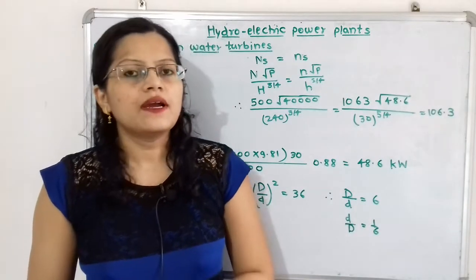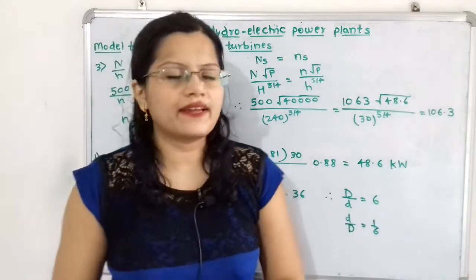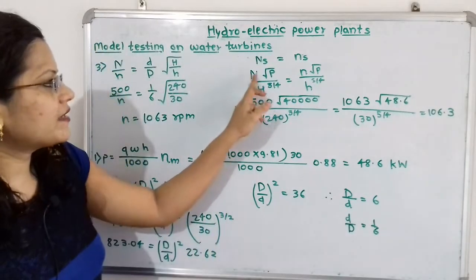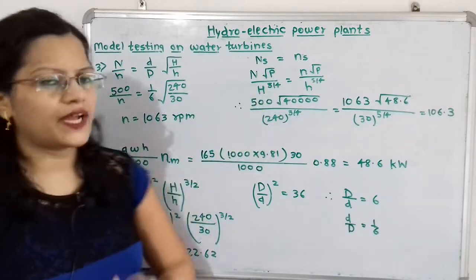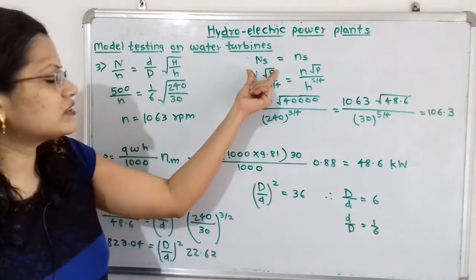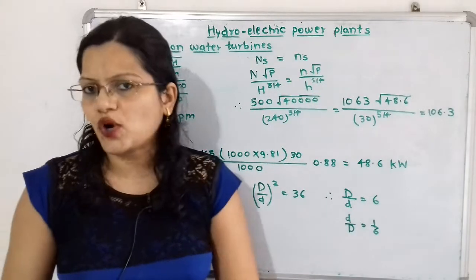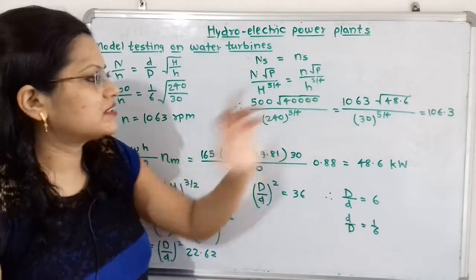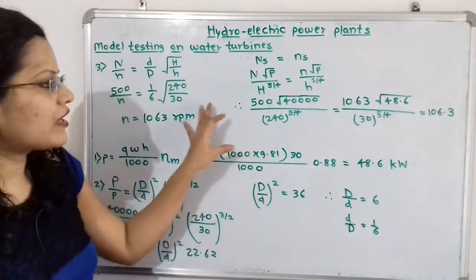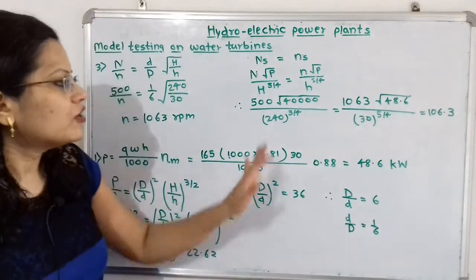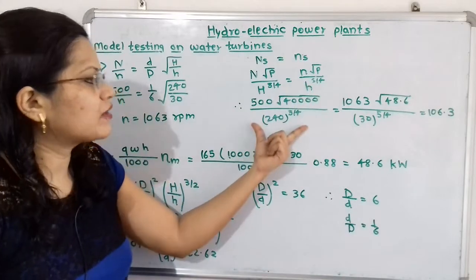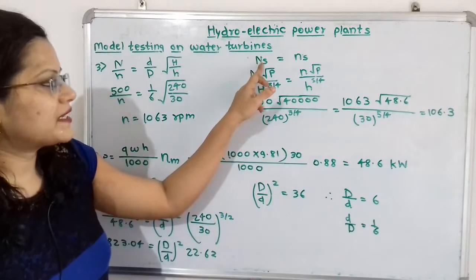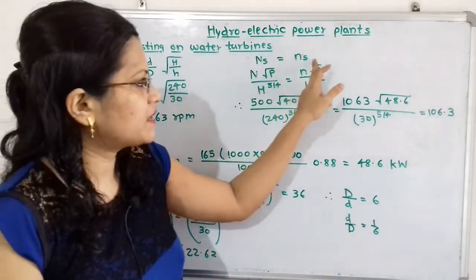The specific speed of the model and prototype should be the same, so capital Ns equals small ns. The formula is N times the square root of P, divided by H raised to 5/4. Using capital letters for the prototype and small letters for the model, all values are now known. When we calculate, the specific speed of the prototype equals the specific speed of the model, and both equal 106.3, which confirms our results.